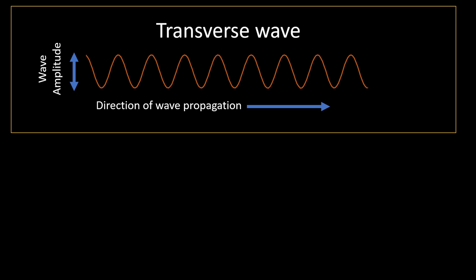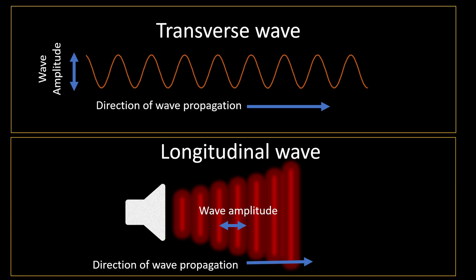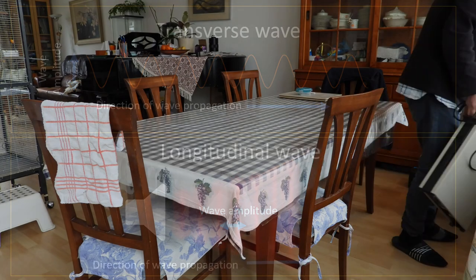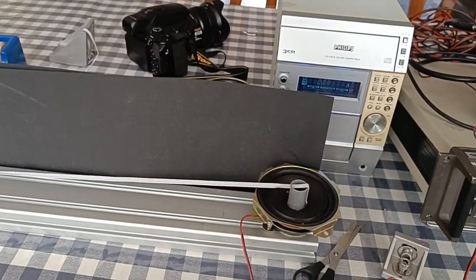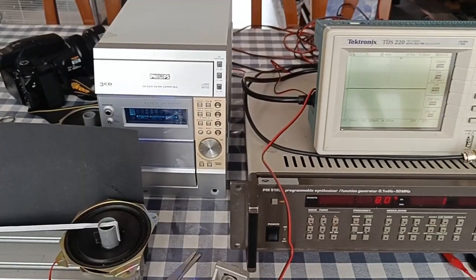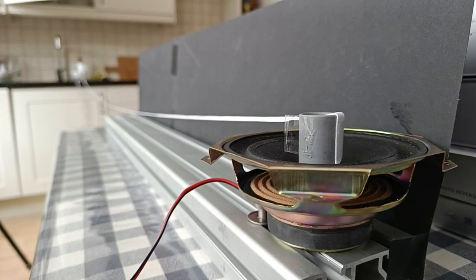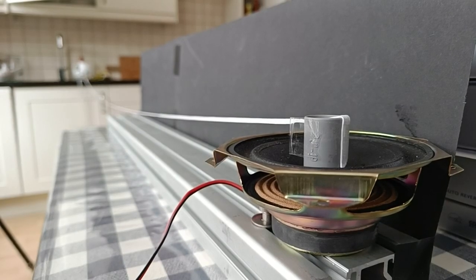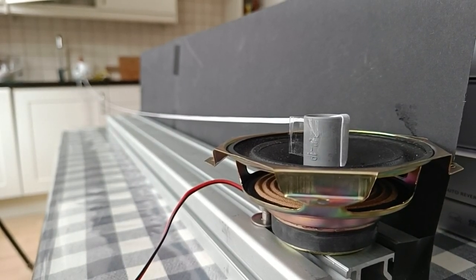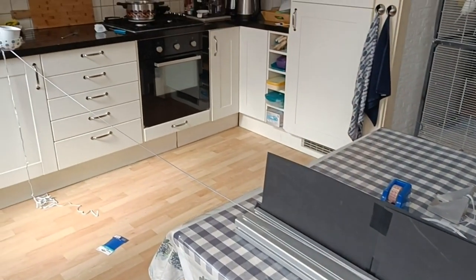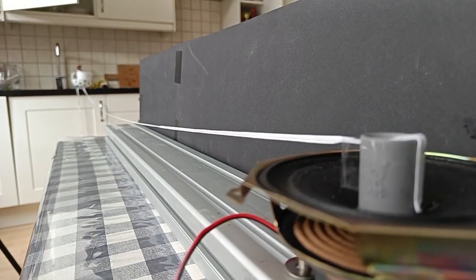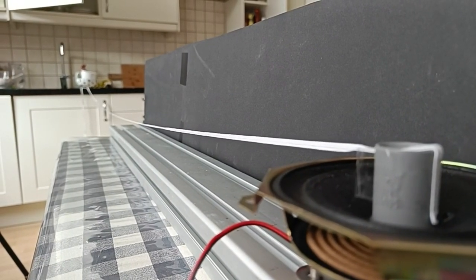The waves we generate are transverse waves, which means that the displacement or amplitude of the wave is perpendicular to the direction of wave propagation. Another type of wave is the longitudinal wave, where amplitude and wave propagation are parallel — this type is found for example in sound waves. The experimental setup is not complex; I actually built it on the kitchen table. To create waves in the string I used a modified speaker cone connected to an audio amplifier, which gets its harmonic signal from a function generator. I glued a plastic pillar in the speaker cone to which a string can be attached.